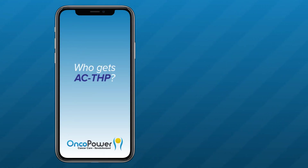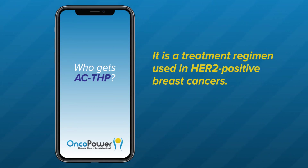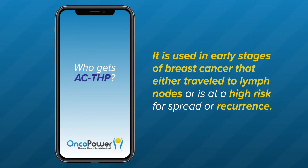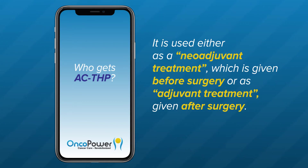Who gets ACTHP? It is a treatment regimen used in HER2-positive breast cancers. It is used in early stages of breast cancer that either travel to lymph nodes or are at high risk for spread or recurrence. It is used either as a neoadjuvant treatment, given before surgery, or an adjuvant treatment, given after surgery.